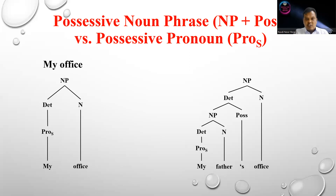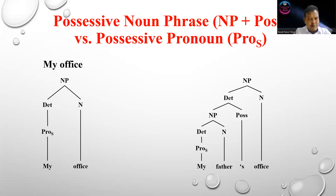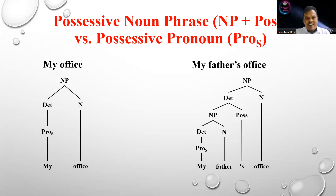Now we are comparing possessive noun phrase with possessive pronouns. This is the other kind of possession — the possessive pronoun, symbolized as Pro-S. The analysis of possessive pronouns is very simple because the determiner is not composed of NP-POS but only of Pro-S. So once you draw the Pro-S, you only label the word that constitutes it. For example: 'my office' — the analysis is very simple.